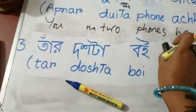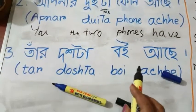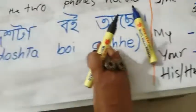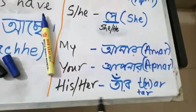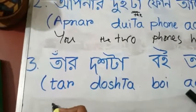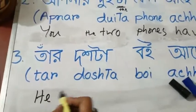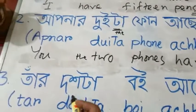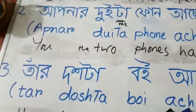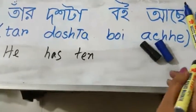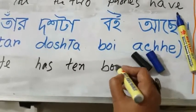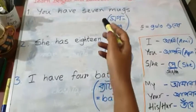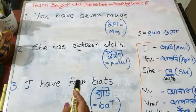The third sentence: 'tar dashta boi ache.' 'Tar' means 'his' or 'her,' 'dosh' means ten, and 'boi' means book or books. So this means 'he/she has ten books.' Here are the three sentences you are supposed to translate into Bangla.